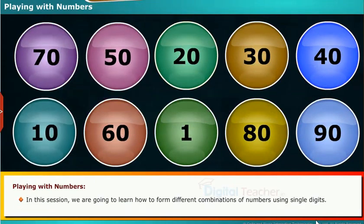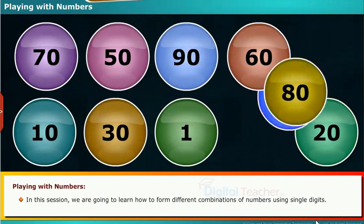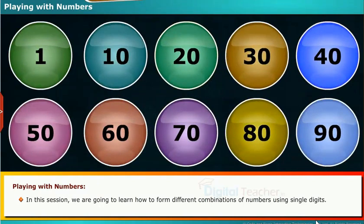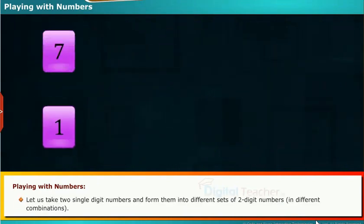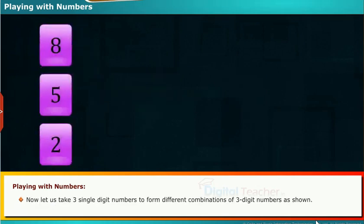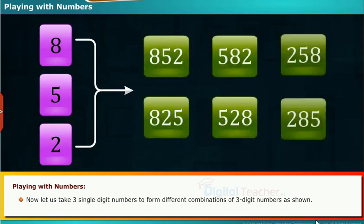In this session we are going to learn how to form different combinations of numbers using single digits. Take 2 single digit numbers and form them into different sets of 2 digit numbers in different combinations. Now take 3 single digit numbers to form different combinations of 3 digit numbers.